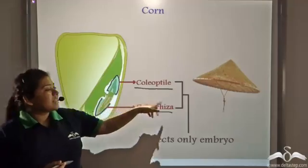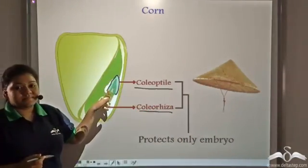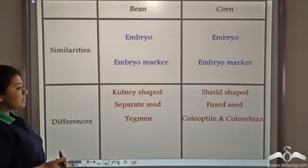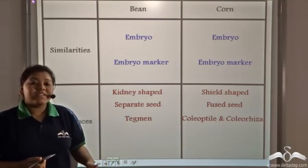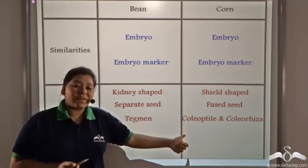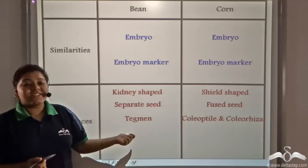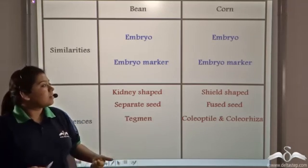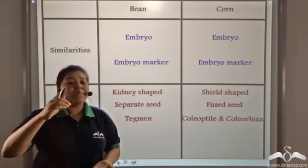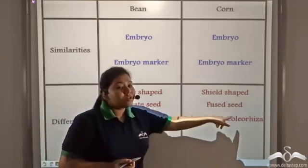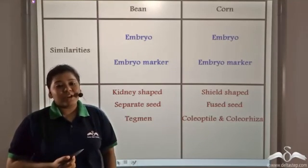Both of them are shaped like a hat. So this is a difference between the bean and the corn: whereas the tegmin provides protection to both the embryo and the endosperm, the coleoptile provides protection only to the shoot-forming part, and the other coleoptile provides protection to the root-forming part of the embryo.